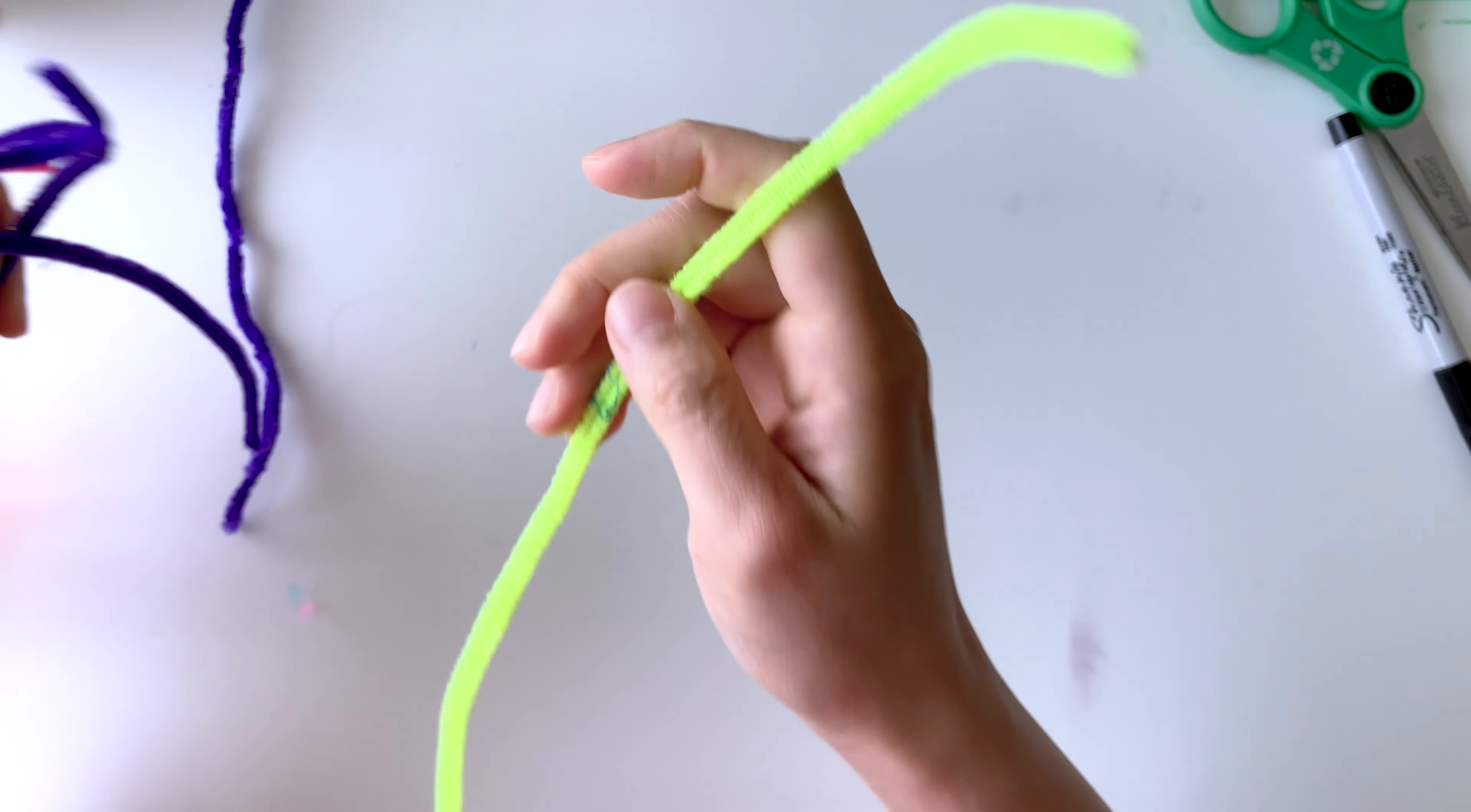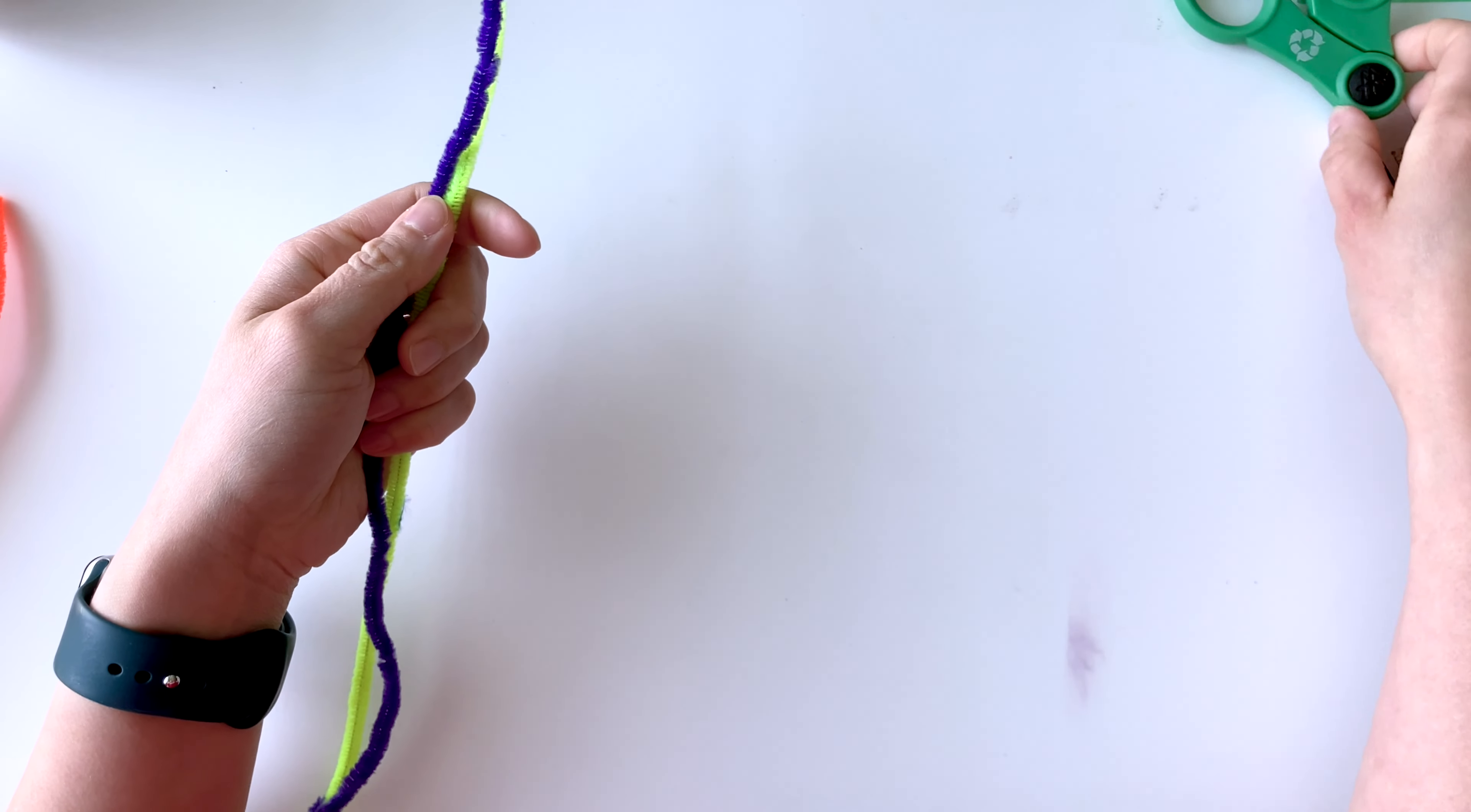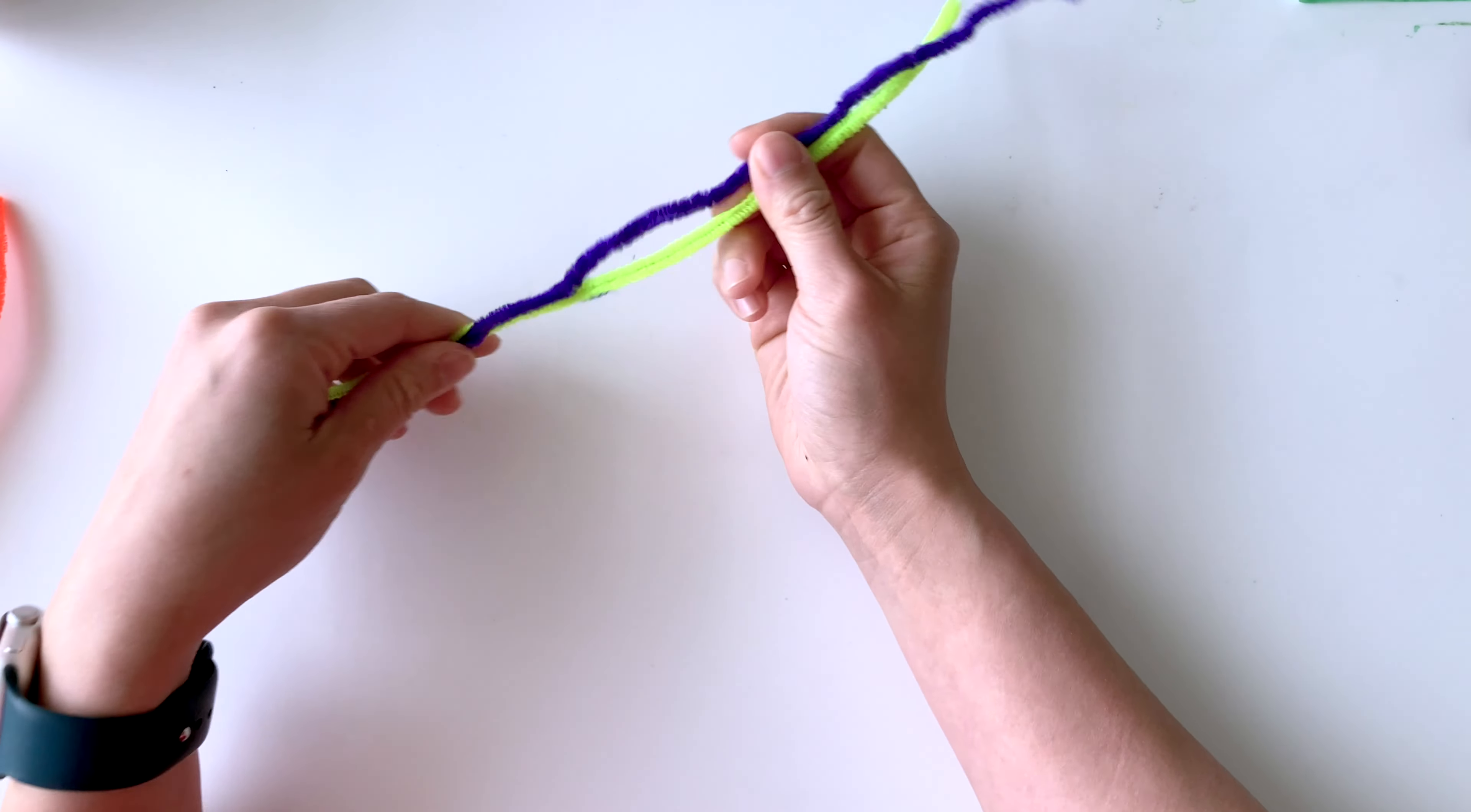So here I have quite a few different pipe cleaners of different colors. I'm going to do a pipe cleaner butterfly ring. Now my daughter loves butterflies right now, she's in a butterfly phase, so I thought it would be really nice to do a butterfly ring.